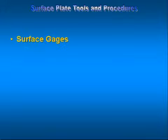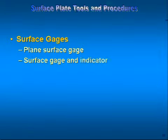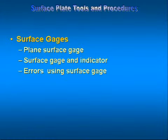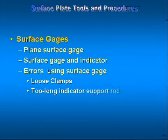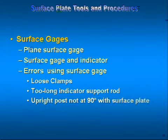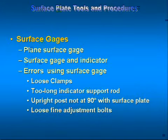Surface plate tools and procedures. In this section we will be discussing surface plate gauges such as a plain surface gauge and a surface gauge and indicator. We will also be discussing errors using surface gauges such as loose clamps, too long indicator support rod, upright post not at 90 degrees with the surface plate, and loose fine adjustment bolts.